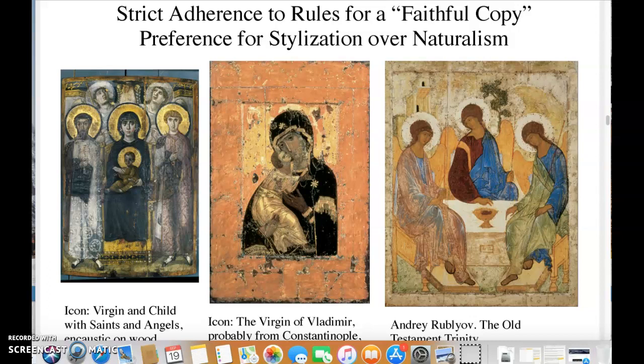Icons were made by strictly trained icon painters, and they were powerful and miraculous because they were understood to be meticulously faithful copies of an original. It was said that there was an original portrait of the Virgin Mary and baby Jesus painted by St. Luke directly in the presence of those holy figures. All holy icons that came after were supposed to be based on that original, primary, most sacred image — copied exactly. So icon painters were trained to copy and to express faithful following of the copy as an act of religious faith.